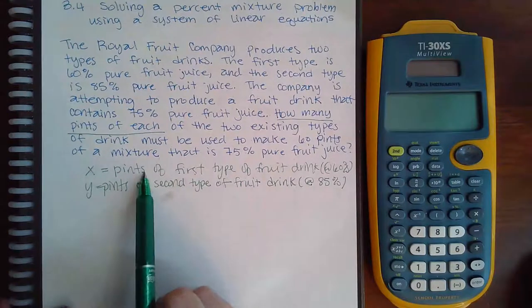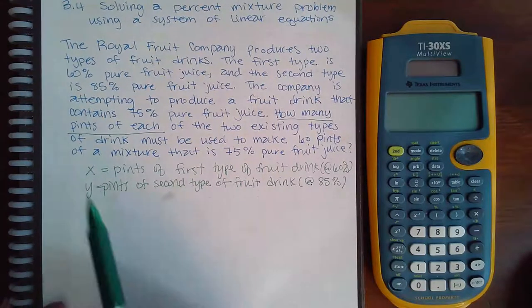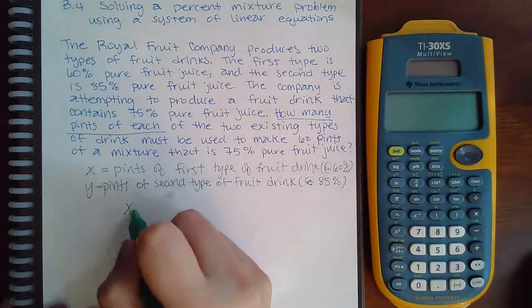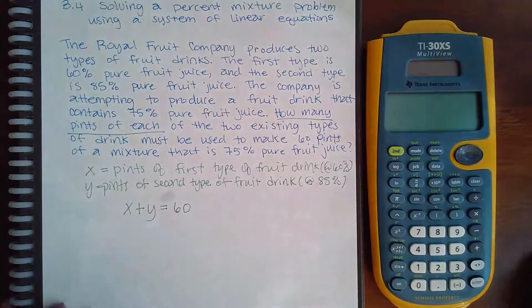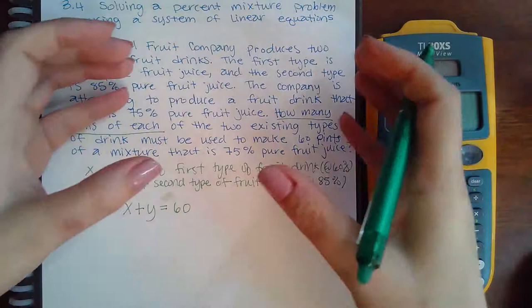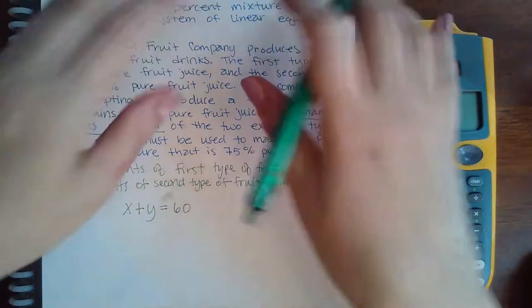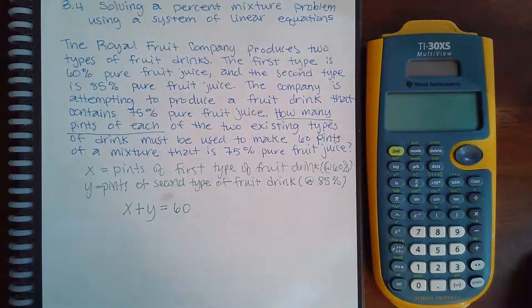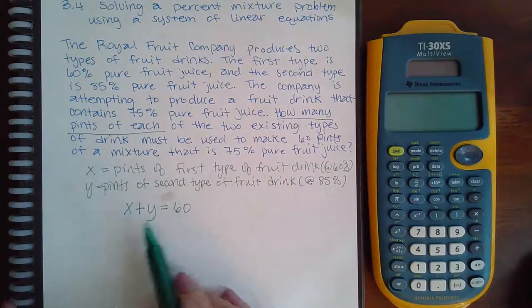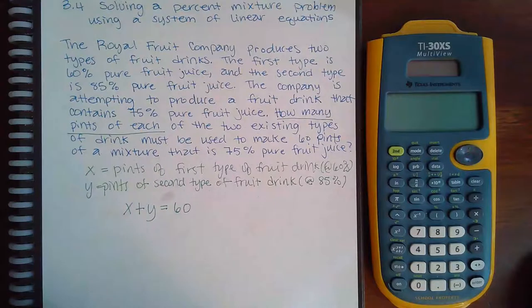If I know the number of pints for the first type and the number of pints for the second type, that means that together these pints should add up to equal 60 pints. You are pouring solutions into a container so you can't put any more than the 60 pints that they're trying to find. So it would be the first type plus the second type equal to 60.